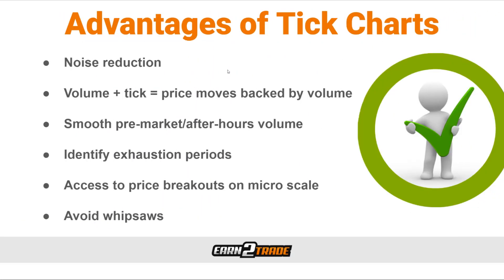There are plenty of reasons why one might prefer trading with tick charts. The first is noise reduction — each bar is created equal and there are no bars with low activity, which prevents us from mistaking market noise for actual signal and getting involved when we probably shouldn't. Also, if we combine volume with tick charts, we can ensure that all ticks on the chart are equal in size. This means we can find out when price movements are backed by high volume, indicating the profile of investors dominating the market, like those institutional ones we mentioned.